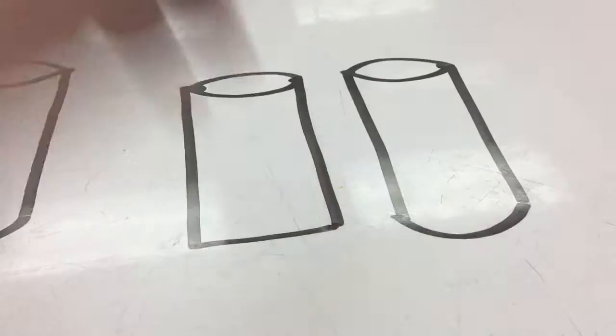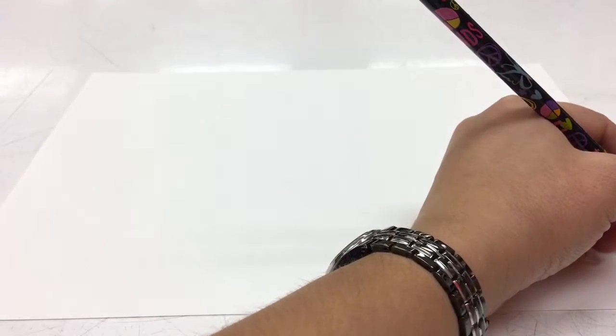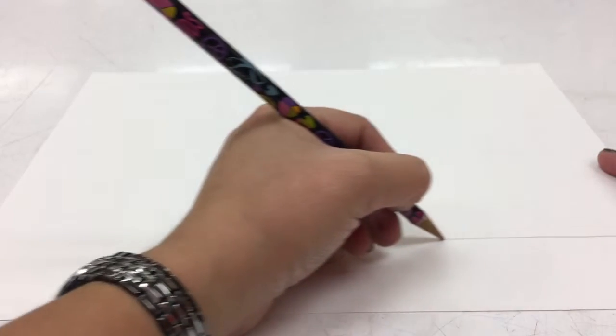So now let's get started on our real paper. In pencil, very lightly, we're going to start at the bottom with a horizon line. We know that this is the line where the sky touches the ground. And you go straight across the paper.